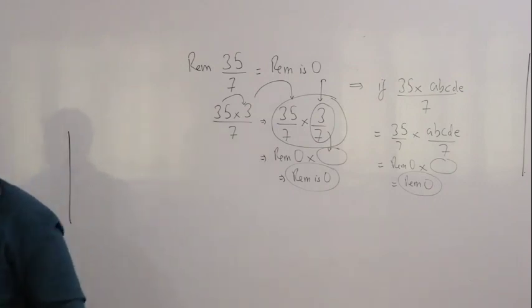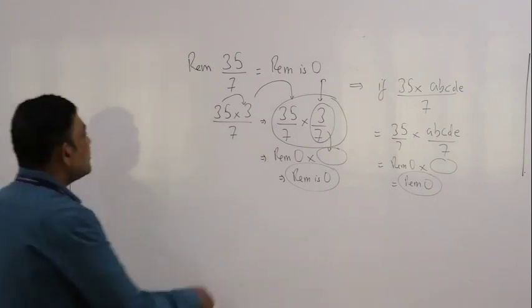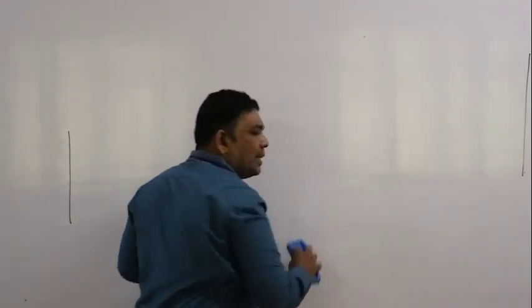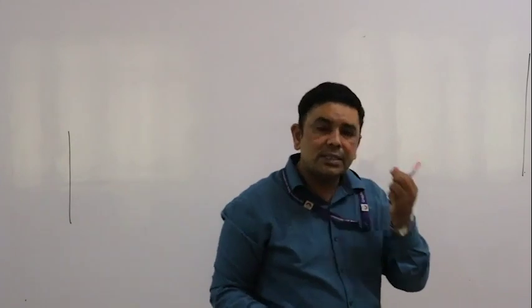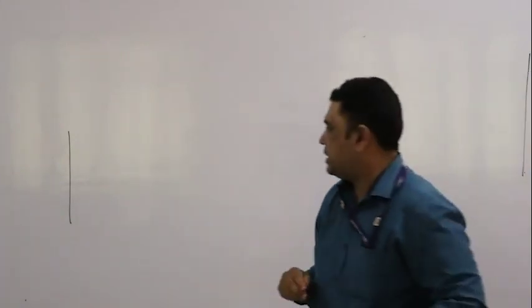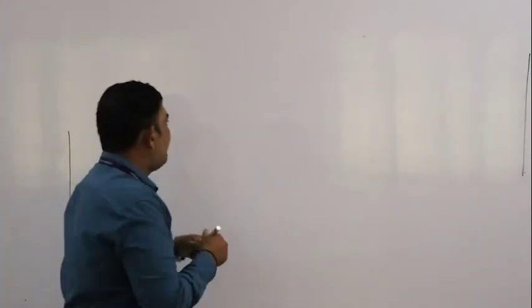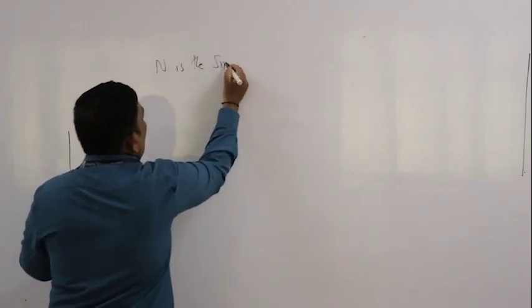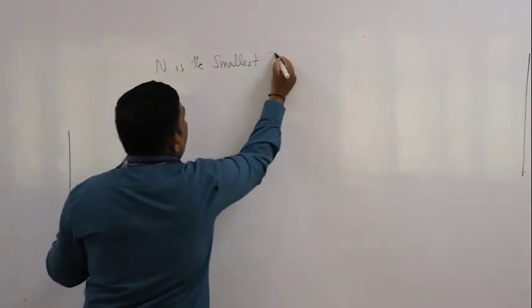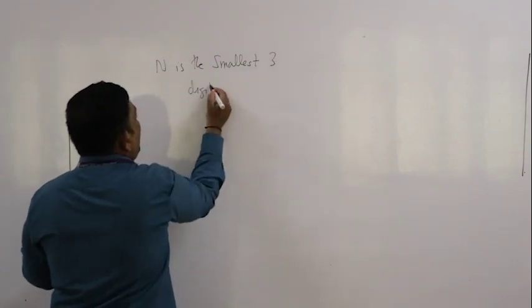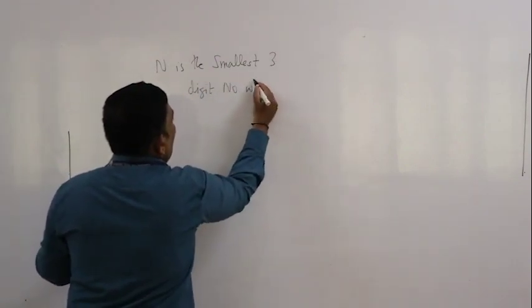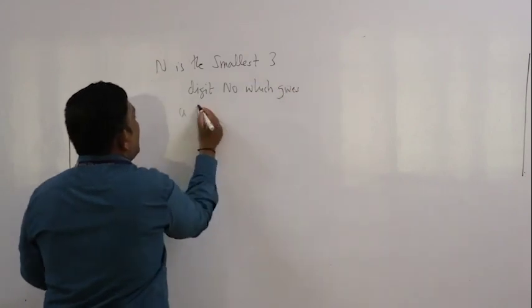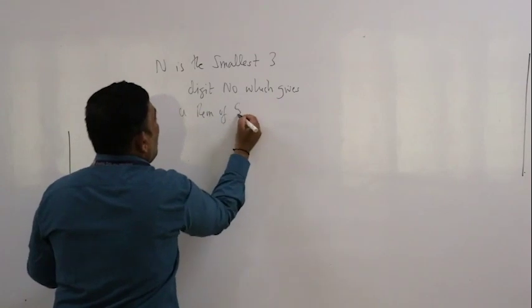Now let me give you another example — and this is a very good question, so listen carefully. N is the smallest three-digit number which gives a remainder of 5...